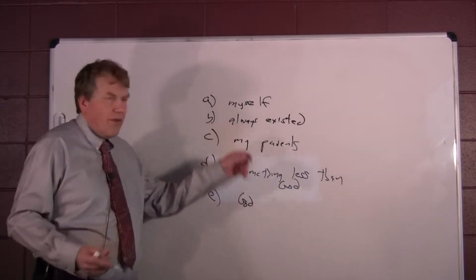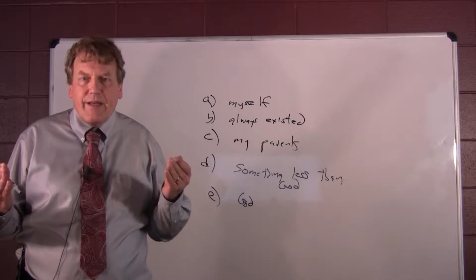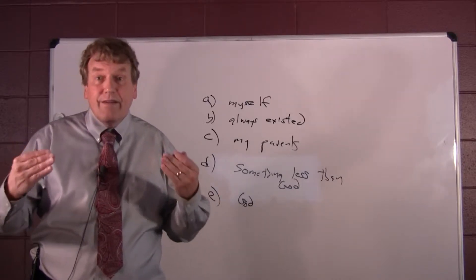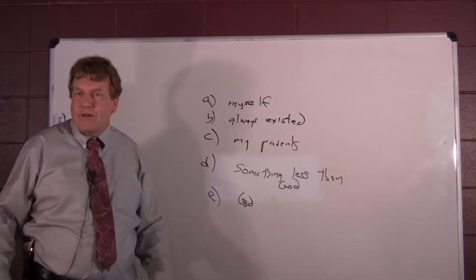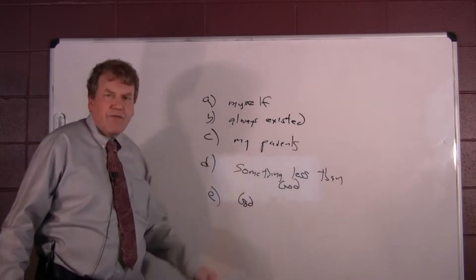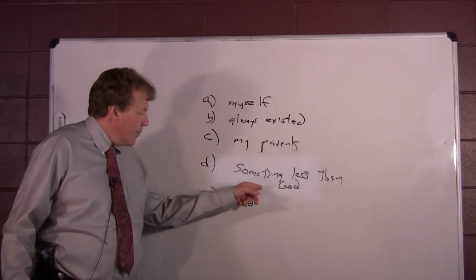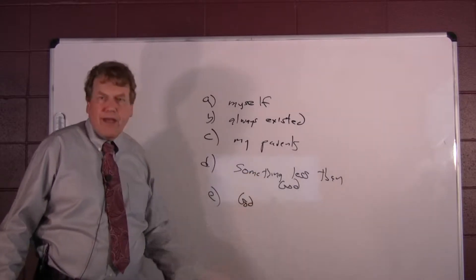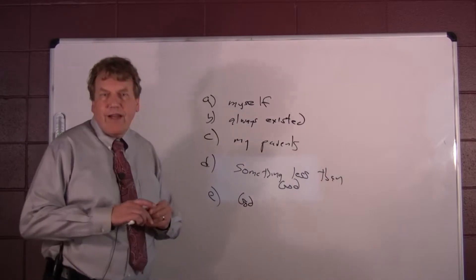Nor does B solve the problem, because if I am a dependent being, I need to be continually sustained by another. I am a dependent being, so it can't be the fact that I've always existed. This leads to an infinite regress, so that's not going to work. The idea of me with the idea of perfection in me cannot come from a non-perfect being, because I have the idea of perfection in me. So the only candidate is God. God exists.